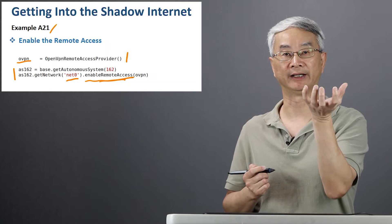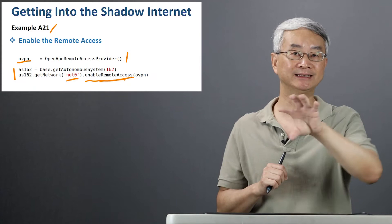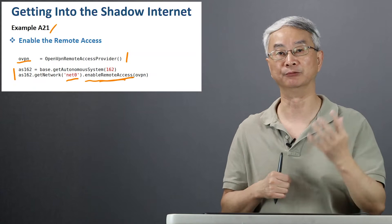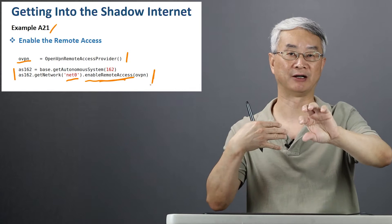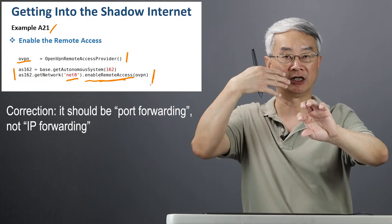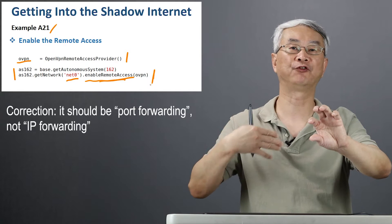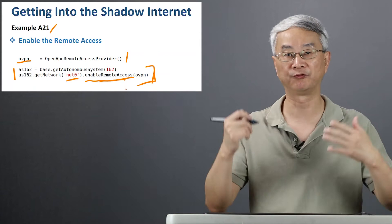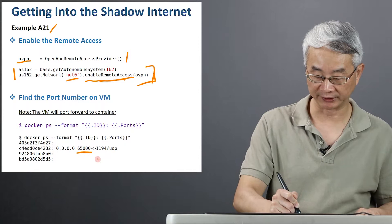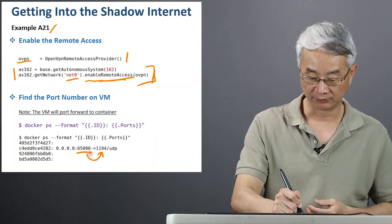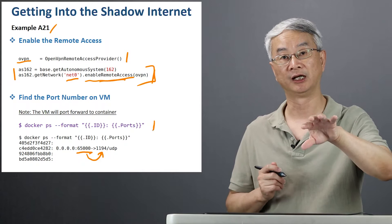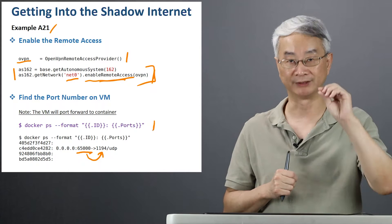Without doing this, the network inside the emulator is not reachable from outside. But with this, now they can be reachable. Containers inside the emulator are not directly reachable from outside, so we do need to use IP forwarding. The host — the container host — which is reachable, needs to port-forward to the container inside. By calling this API, port forwarding will be created. You do need to find out which port is forwarded to VPN — VPN uses 1194. You can use this command on the Docker host to find out which port number is actually forwarded to that VPN server.